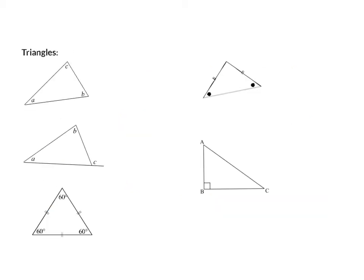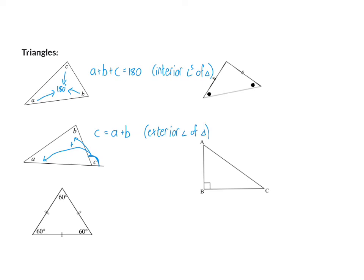My next group of theorems have to do with triangles. First, we know that the three interior angles of a triangle all add up to 180 degrees. So A plus B plus C is 180 degrees, and my reason is interior angles of a triangle. Next, if I have an exterior angle to a triangle, that angle will be the same as the two opposite interior angles added up. So angle C will be the same as A plus B, and my reason is exterior angle of a triangle.